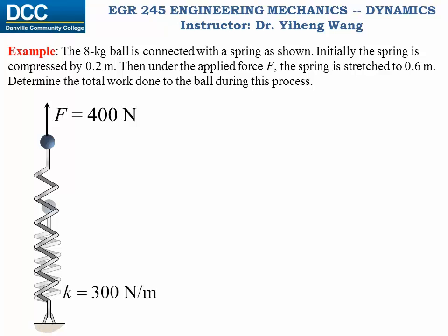To determine the work done by all these forces, the first step is to specify the initial and final positions of the particle. For the weight force and the applied force, the reference point doesn't matter — you will get the same result regardless of reference location. However, to use the spring force work equation, the reference location must be the neutral position of the spring. Therefore, the initial position is negative 0.2 meter (spring compressed) and the final position is positive 0.6 meter (spring stretched).